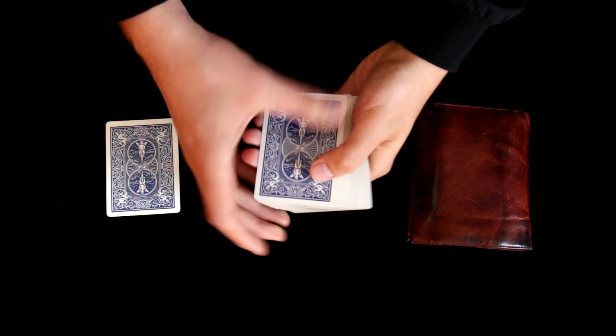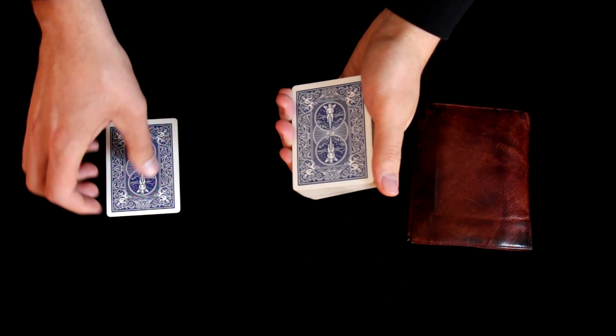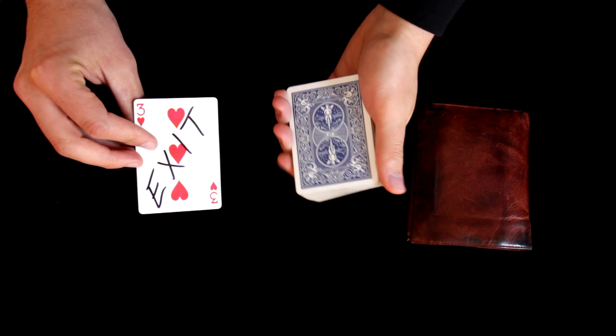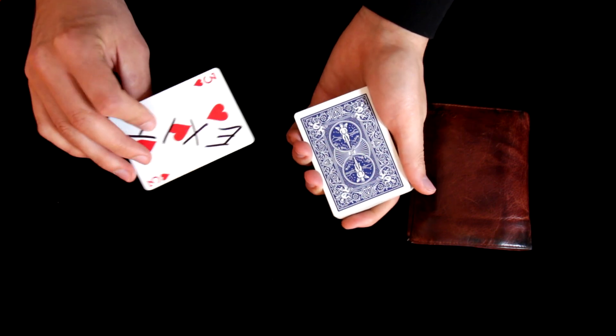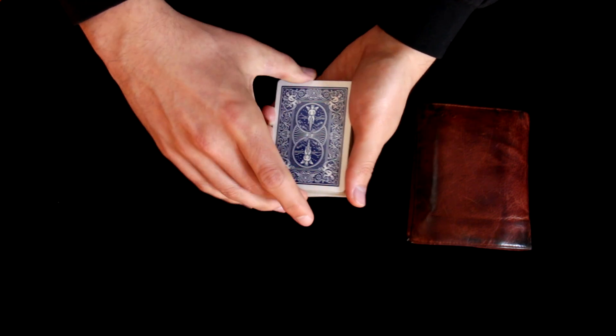Now take the deck and let the spectator choose any card and sign it. We will again use the same card that is signed with my name, it is three of hearts. So once it is signed, just return it somewhere inside the packet and control it to top.